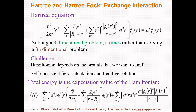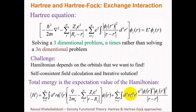After finding the self-consistent orbitals, the average energy can be computed by calculating the expectation value of that wave function. This includes the kinetic energy of each orbital, the interaction of each orbital with the ions, and the electron-electron interaction in a mean-field kind of way.